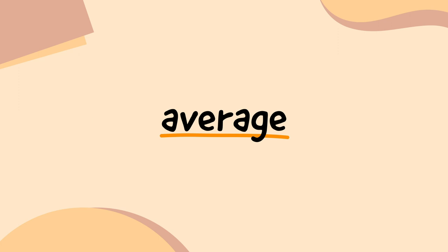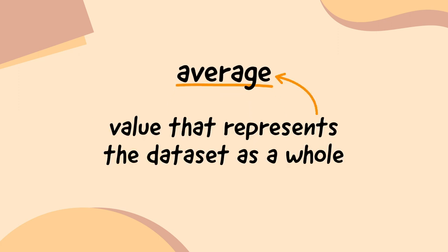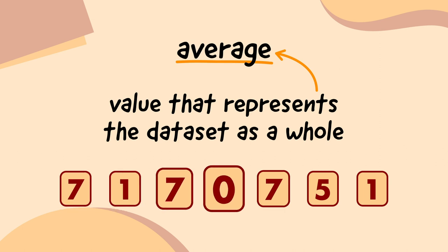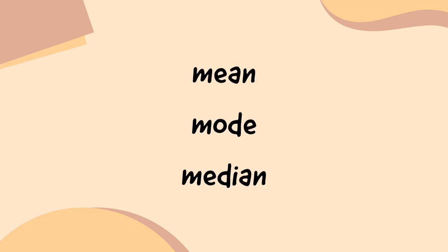The average value of a data set is a single value that represents the data set as a whole. It can help us to quickly get a general idea about lots of data without having to understand each individual value in the set. So it's how the drinks companies can turn their research data into easy-to-read headlines. Exactly. Here are three different ways of calculating the average value in a data set: Mean, Mode, and Median.